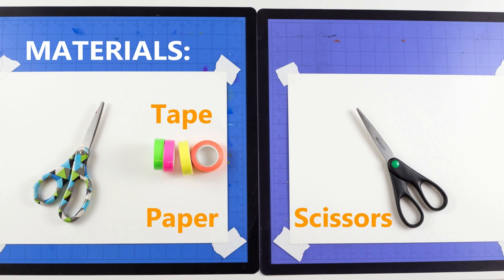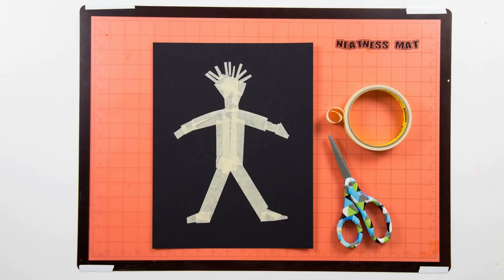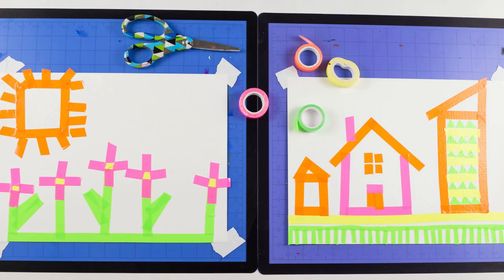You can use a variety of different kinds of tape. You can use washi tape which is a Japanese paper tape or craft tape. You can use masking tape and you can use vinyl tape such as electrical tape.